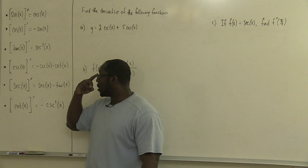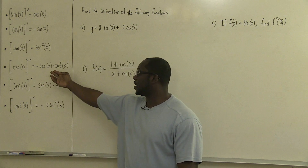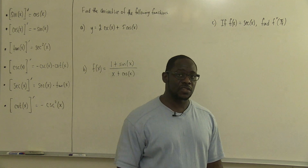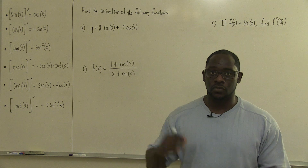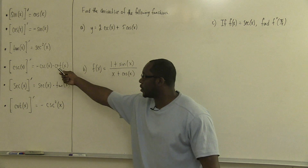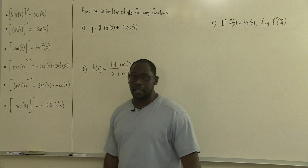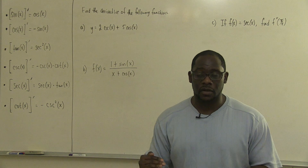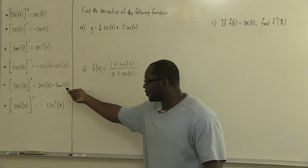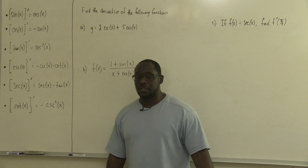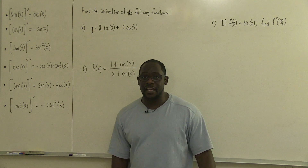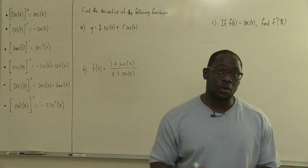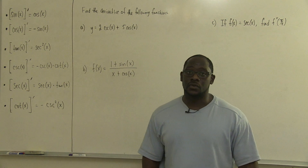For cosecant x, if we take the derivative of that, we end up getting negative cosecant x times cotangent x. We know that cosecant is just one over sine x, so if we did the quotient rule to one divided by sine x, we would get this answer. Similarly, for secant x, its derivative is secant x times tangent x — applying the quotient rule to one divided by cosine x gives us that. And for cotangent x, its derivative is negative cosecant squared x, since cotangent is cosine divided by sine.